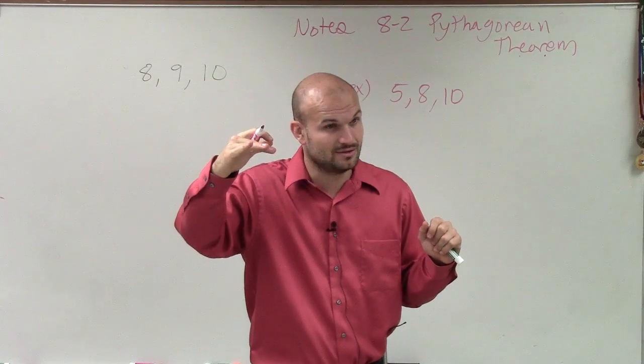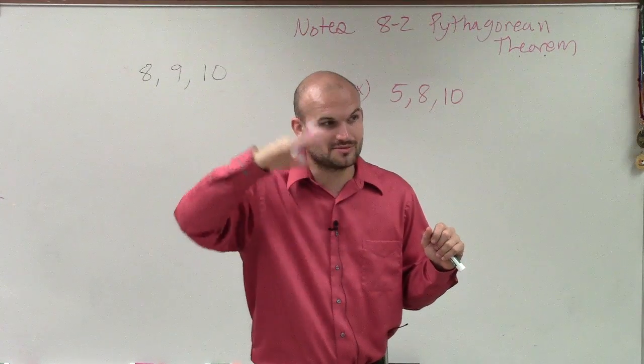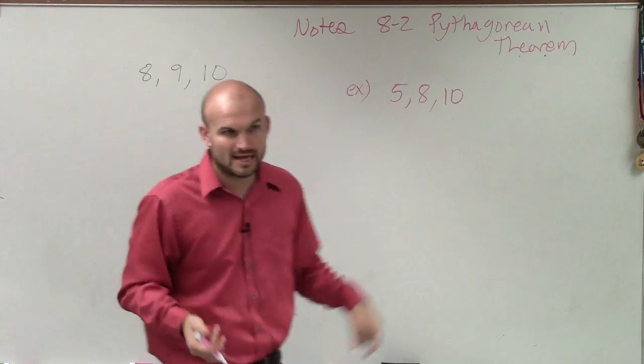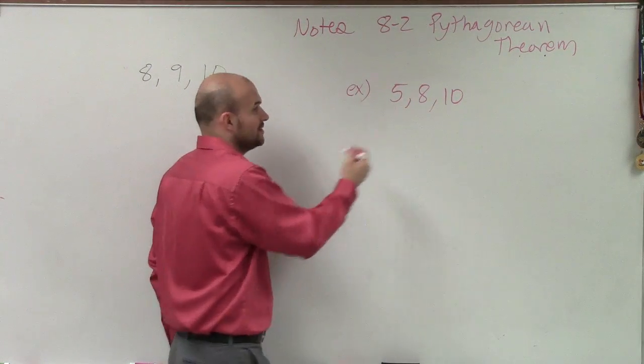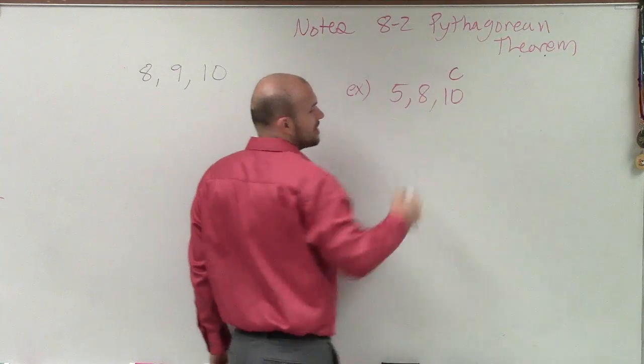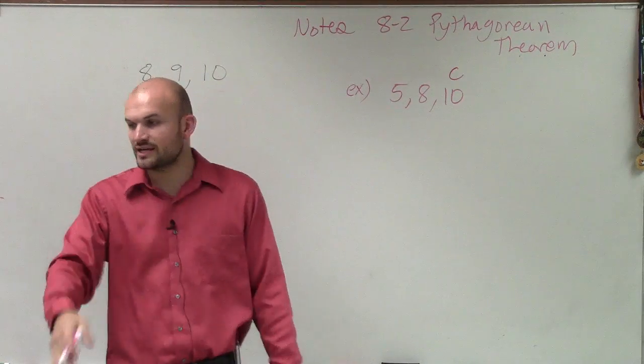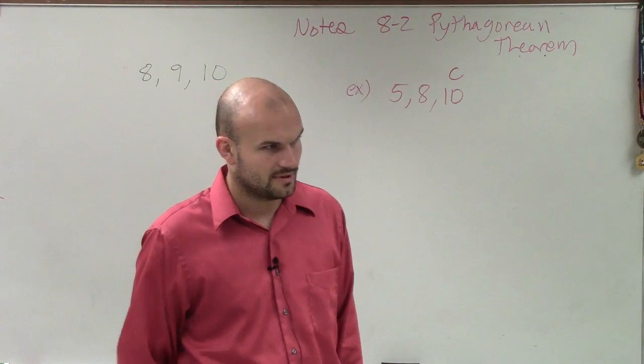So it's across from our angle, but it's technically supposed to be our longest leg. If it was a right triangle, we would say that this is our hypotenuse because it's the longest side of the triangle.